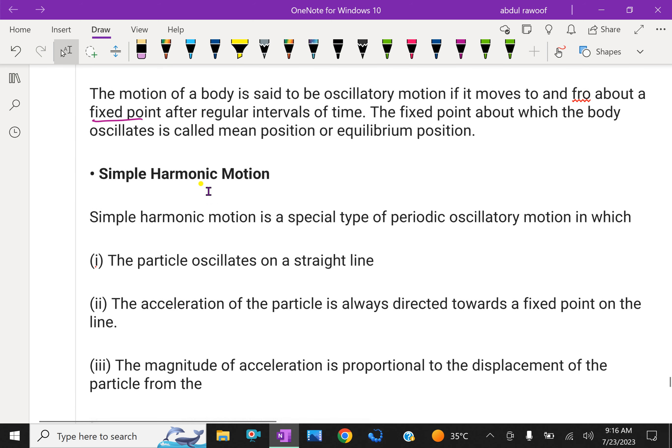Oscillatory motion: the motion of a body is said to be oscillatory motion if it travels to and fro about a fixed point after regular intervals of time. It is a good example of a pendulum, a clock pendulum. The fixed point about which the body oscillates is called the mean position or equilibrium position.